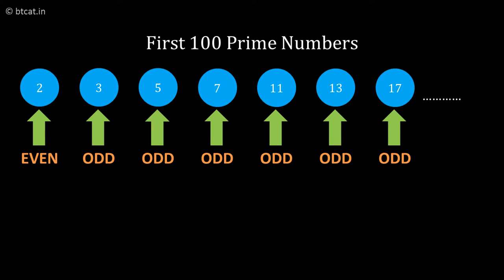So if we multiply the first hundred prime numbers, since there is the presence of 2, and the remaining 99 are odd, still the net answer would become even.